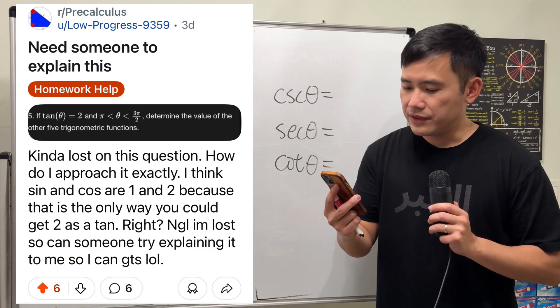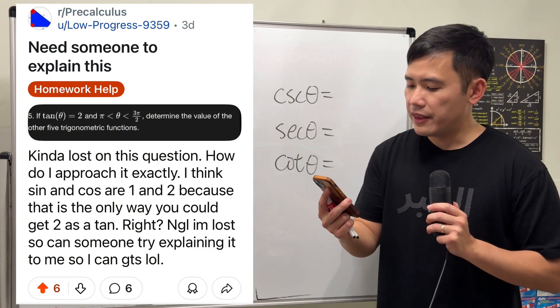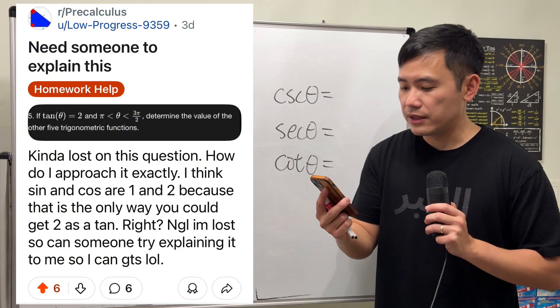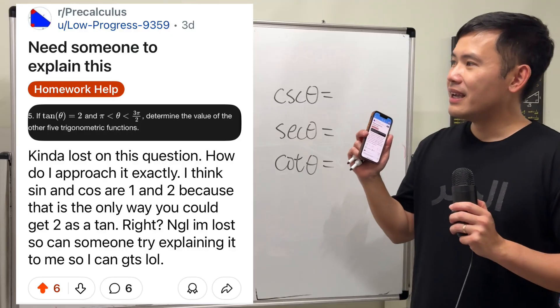Need someone to explain this. If tangent theta is equal to 2 and theta is between π and 3π/2, then we are going to find the values of the other trig functions.